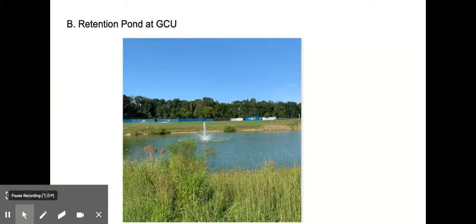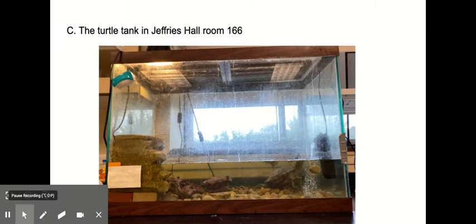The second site, which we label site B, is the retention pond at Georgian Court by the athletic fields. And the third water sample, which we labeled sample C, is from the turtle tank in the classroom in Jeffries Hall, room 166.